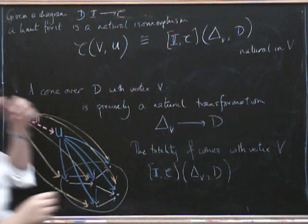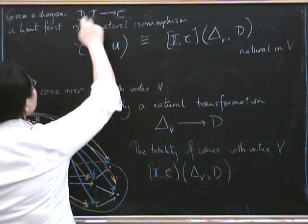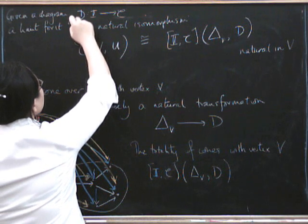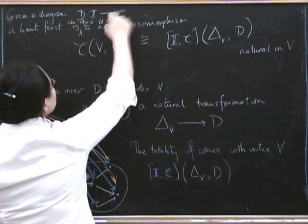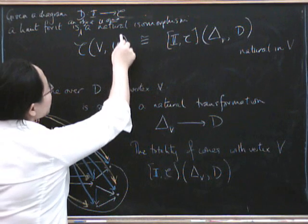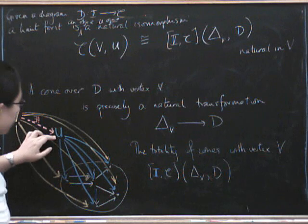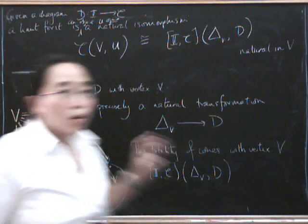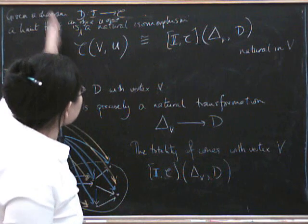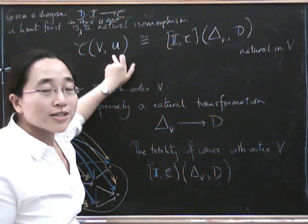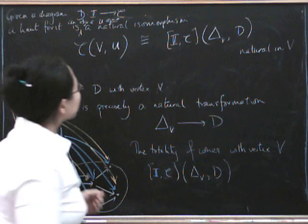And I suppose what I should really say is a limit for it is an object U and a natural transformation like this. So often when we talk about the limit for the diagram, we think mostly about this object U, which is the vertex of the cone. But we should always remember that this thing comes equipped with this entire cone. And you can see from this definition that the object U is just barely the tip of the iceberg. And that this natural isomorphism is what's going to give us the fact that it's a universal cone.